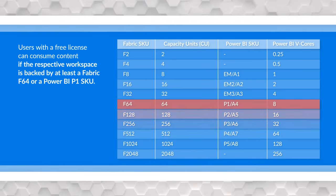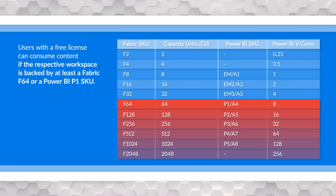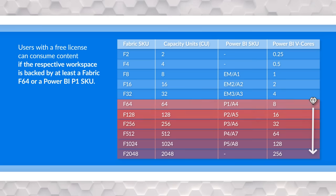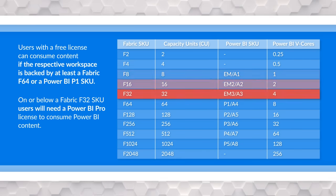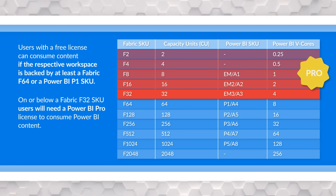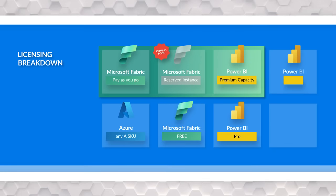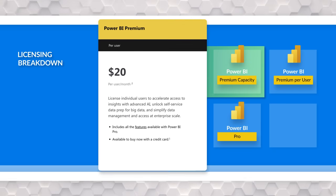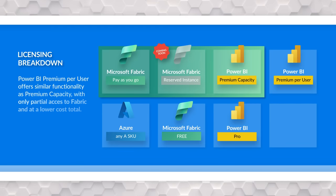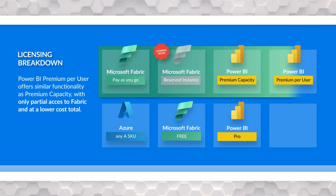From a report consumption perspective, as long as you're on a Fabric capacity F64 SKU or higher, or you're on Power BI Premium, free users can consume content without needing a Pro license. If you are below that and want to consume Power BI reports inside the Fabric portal, you will still be required to have a Power BI Pro license.